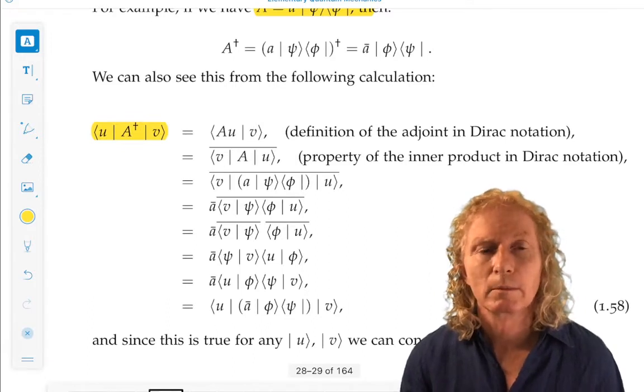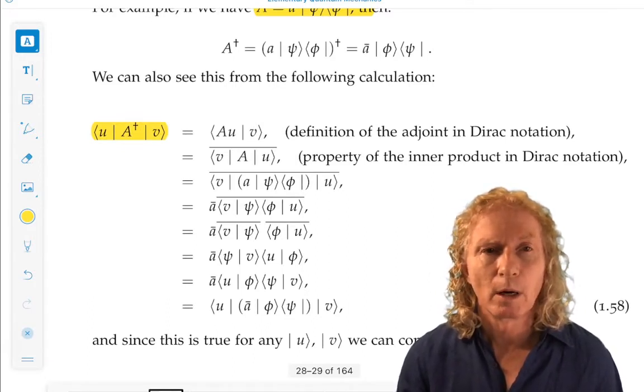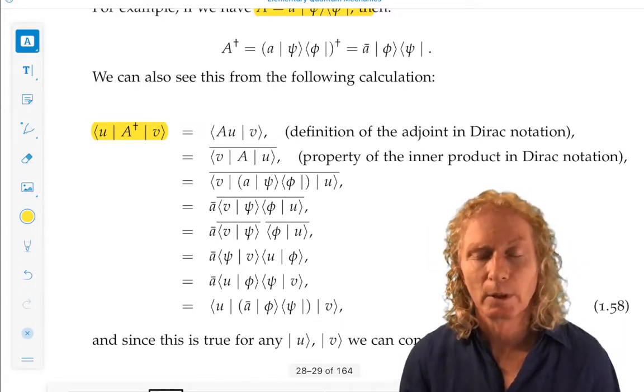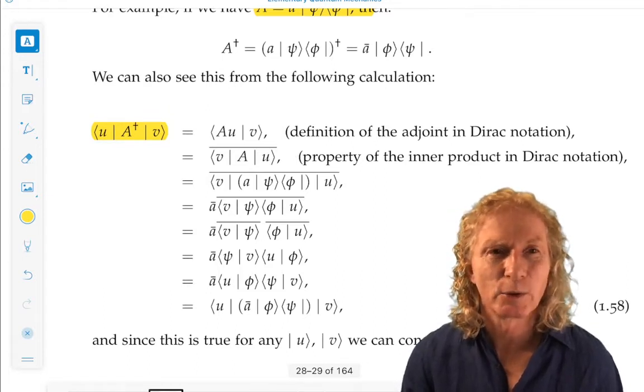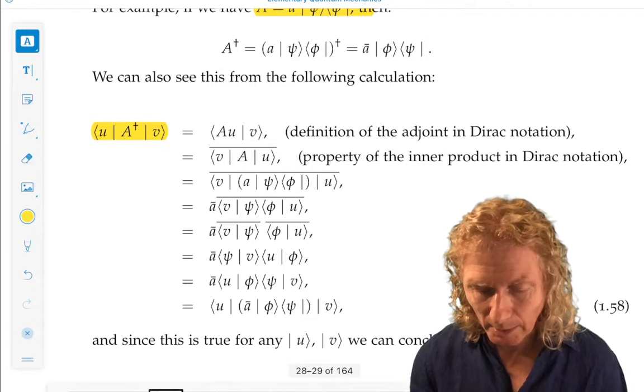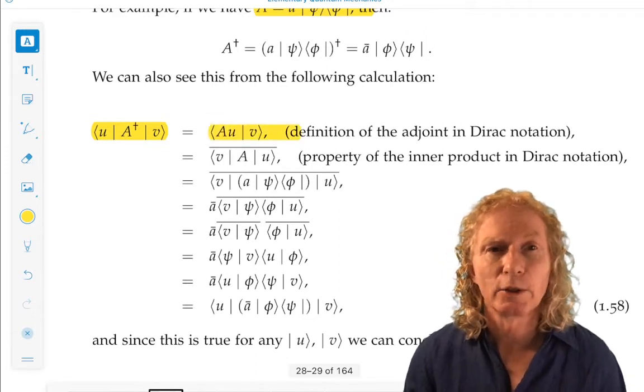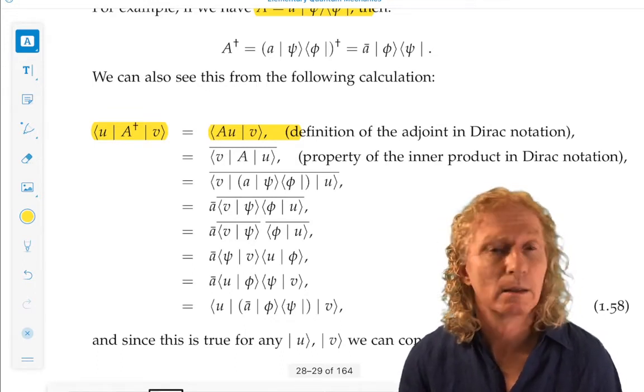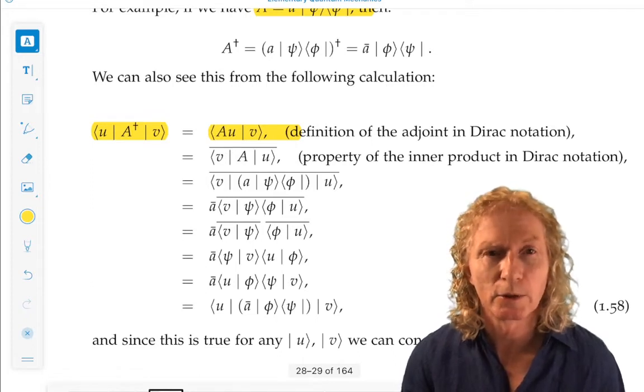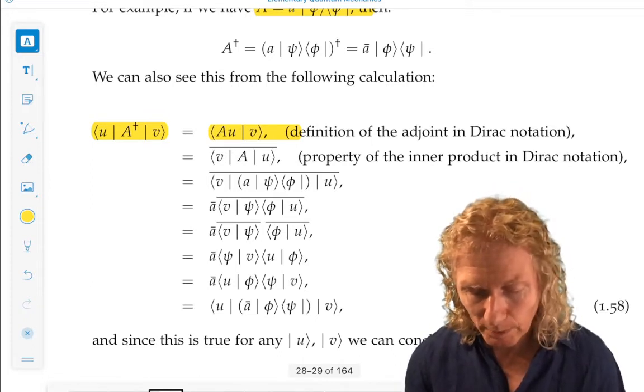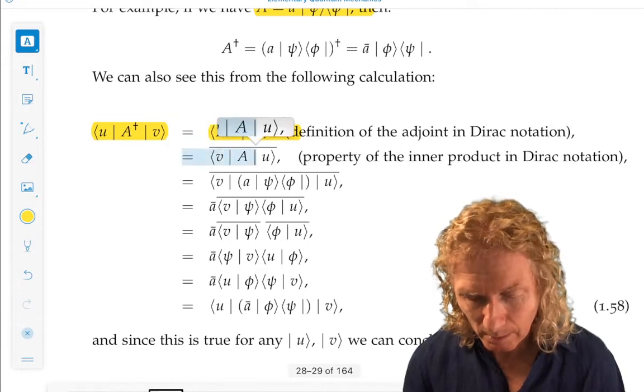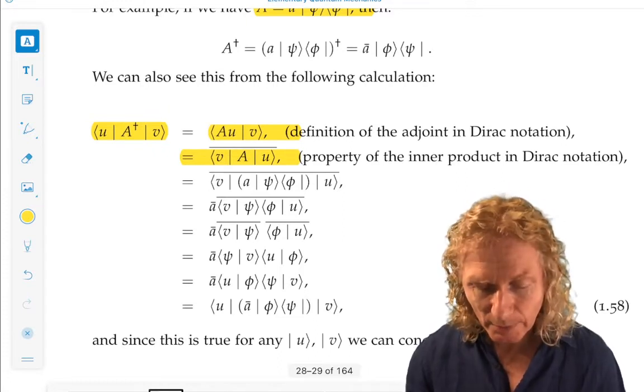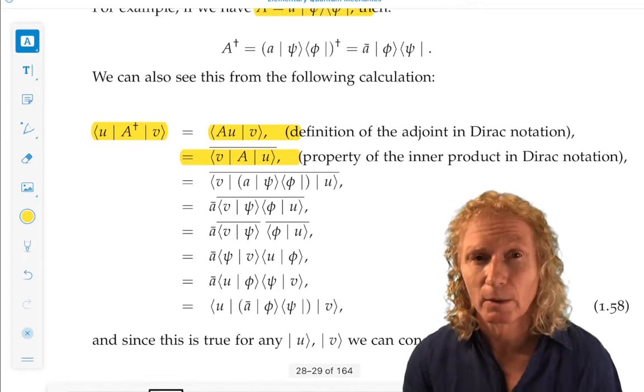For an arbitrary Bra U Ket V, we substitute, we insert the adjoint of A in between them. If we use the definition of the adjoint in Dirac notation, we can move A to the left, but we take off the adjoint sign. Then we can move to the next line by using a property of the inner product represented in Dirac notation. This is really important that these two lines you understand very carefully.